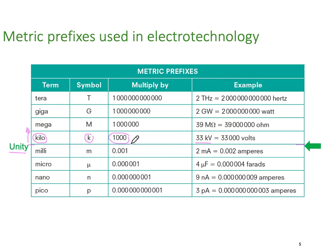The next one is mega. We use a capital M. Mega just means 1,000,000. So if I had a resistor that was 39 mega ohms, it would be 39 million ohms.